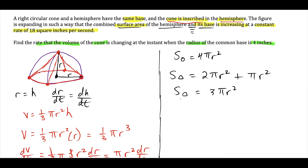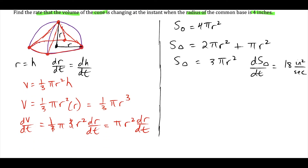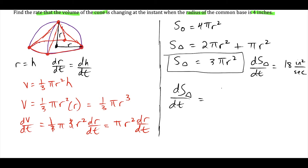We're told the rate of change of this surface area is 18 square inches per second, so dS/dt (hemisphere) = 18 in²/sec. Taking the derivative of S = 3π r² with respect to time gives dS/dt = 6π r · dr/dt. Dividing both sides by 6π r, we get dr/dt = dS/dt divided by 6π r.